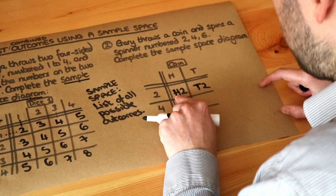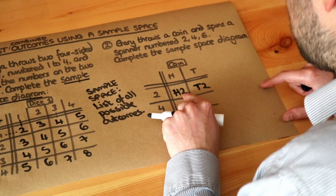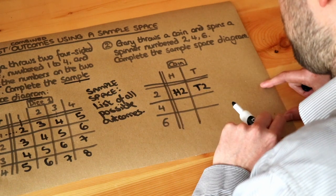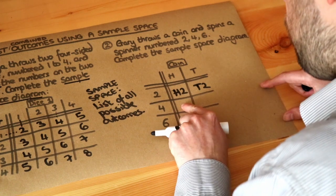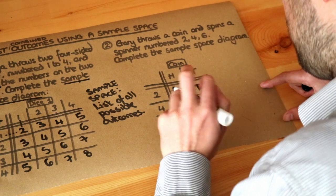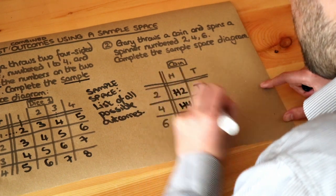What about here? We've got heads on the coin and a four on the spinner, so that's going to be H4. And similarly, we've got tails and a four, so that's T4. And then here we've got heads and a six, so that's H6.